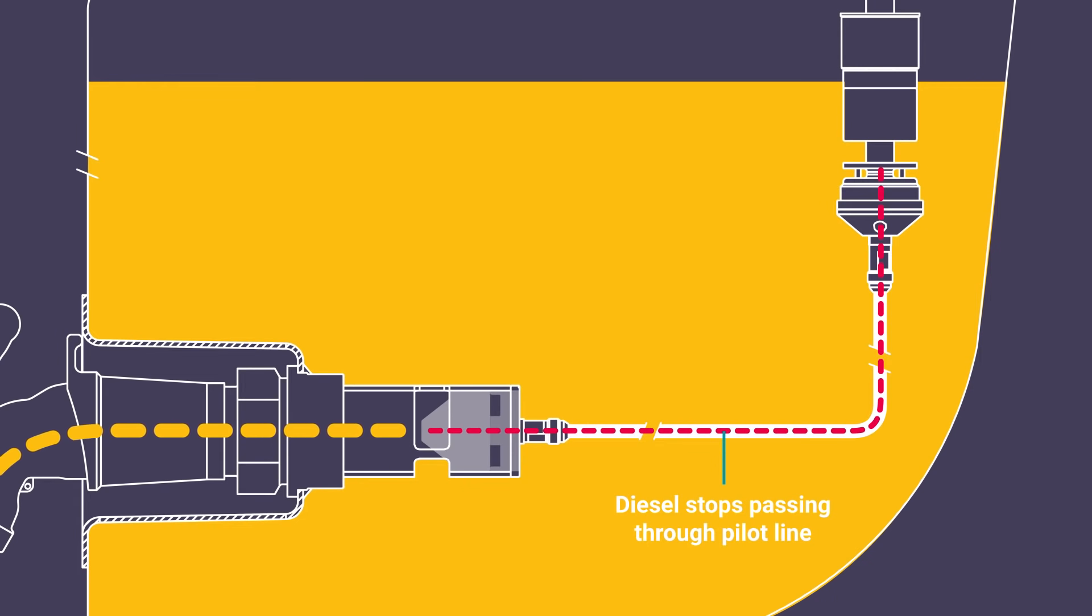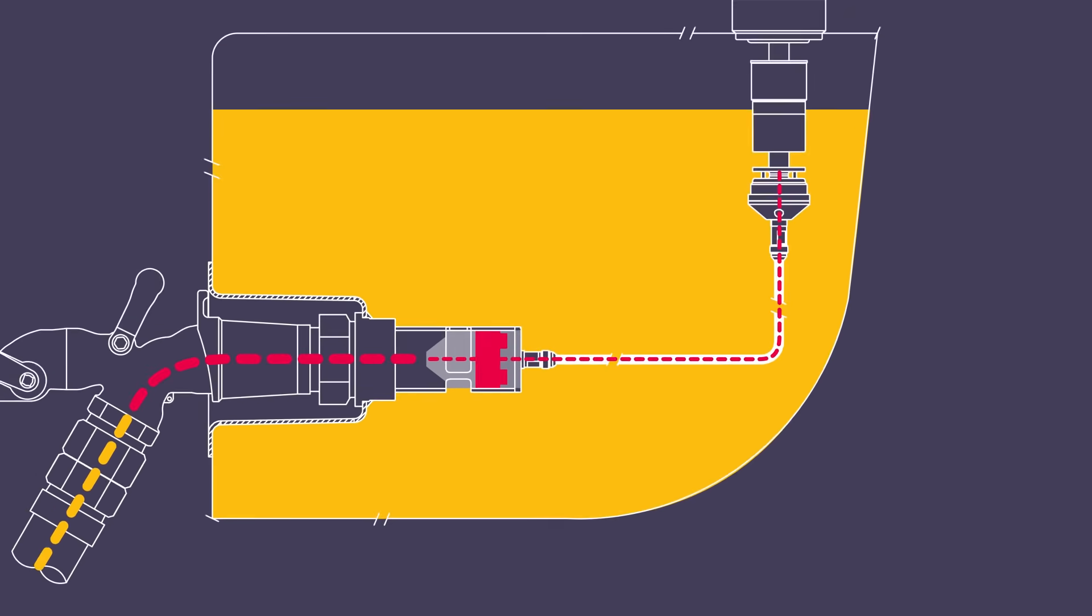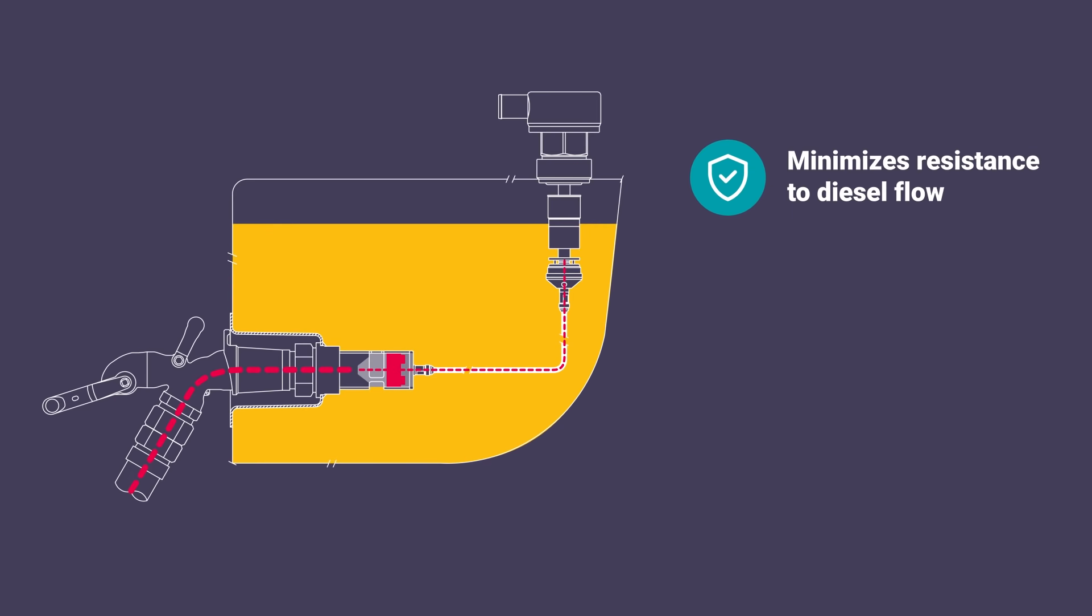As soon as diesel stops moving through the pilot line, the flow control valve is triggered to close. This clever design minimizes the resistance to fuel flow, ensures zero pressure buildup in the tank, and rapidly terminates filling when the correct ullage is reached.